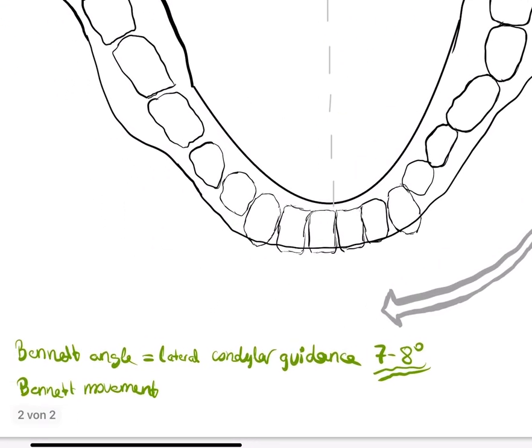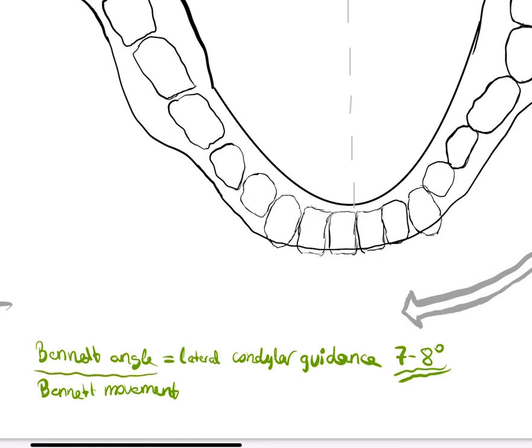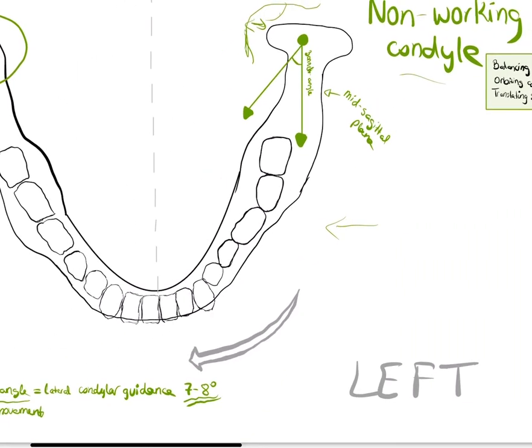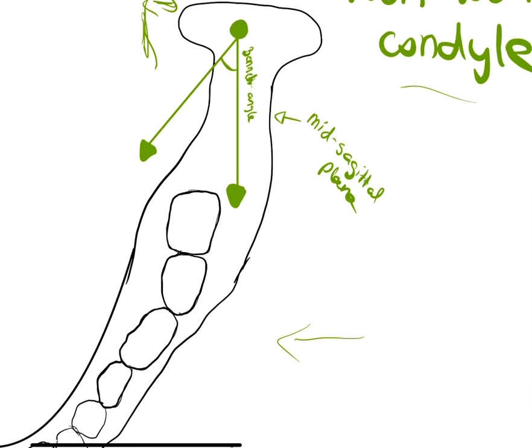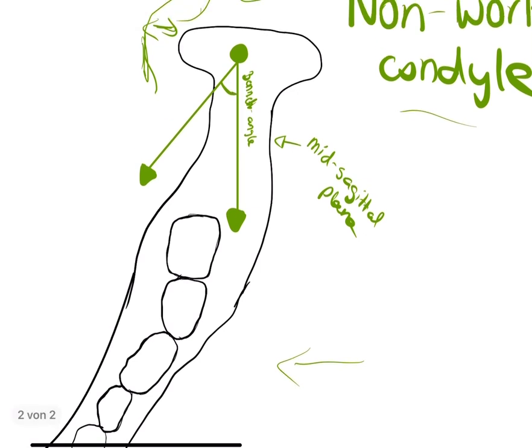Next term: what is the Bennett angle? The Bennett angle is the angle formed between the mid-sagittal plane and the medial wall of the glenoid fossa on the non-working side. This is around seven to eight degrees.